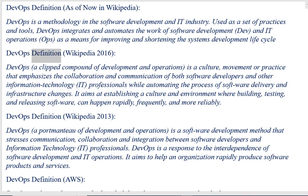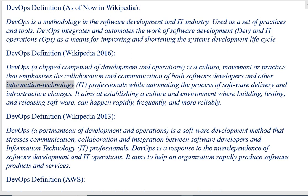DevOps definition, Wikipedia 2016: DevOps, a clipped compound of development and operations, is a culture, movement or practice that emphasizes the collaboration and communication of both software developers and other information technology professionals while automating the process of software delivery and infrastructure changes. It aims at establishing a culture and environment where building, testing and releasing software can happen rapidly, frequently and more reliably.